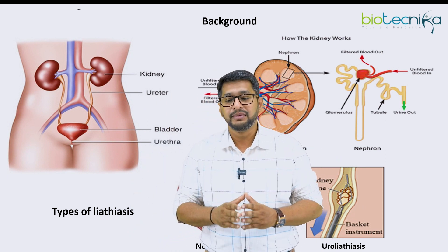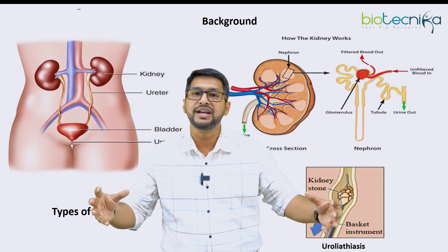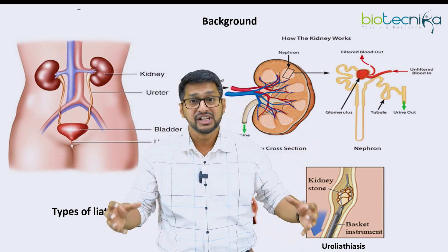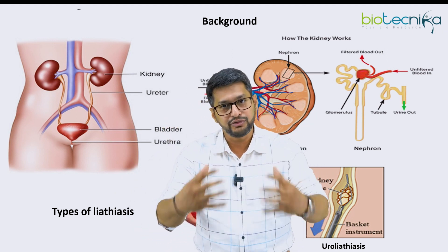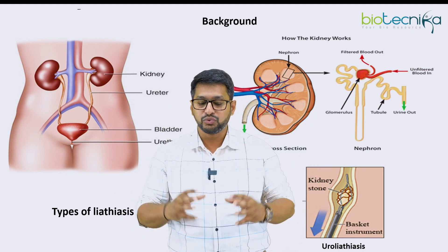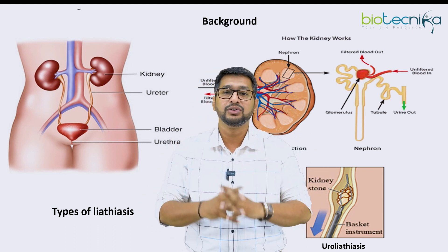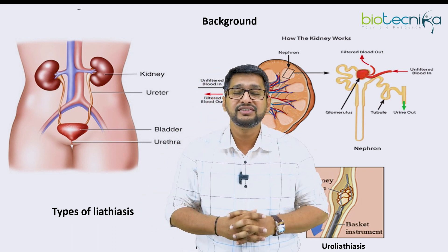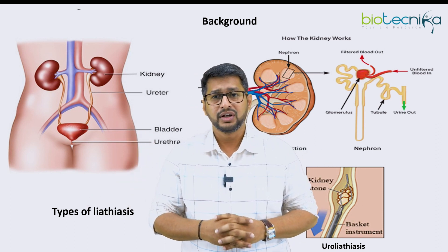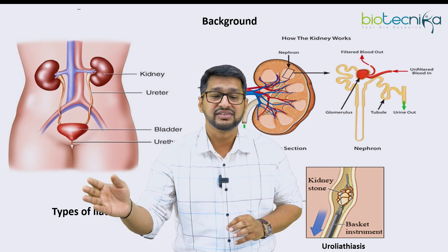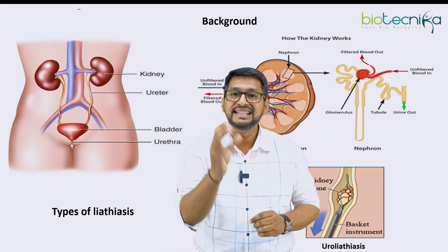At this point I want to classify kidney stones into two major types based on the location in which the kidney stone is formed. There are two components. One is the stone formed within the kidney — the process of stone formation is simply called lithiasis. Lithiasis is the formation of stones. Lithia means stone — remember in primary classes we studied about the lithosphere, that is the sphere with stones. So the same terminology has been used here.